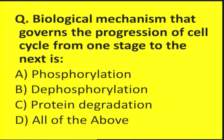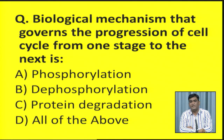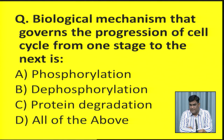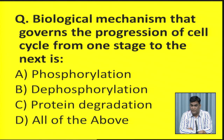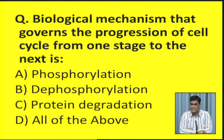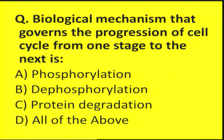This question asks about the biological mechanism that governs progression of the cell cycle from one stage to the next: phosphorylation, dephosphorylation, protein degradation, or all of the above. Kinase and phosphatase activity bringing about phosphorylation and dephosphorylation are always involved in cell cycle regulation. Protein degradation also matters because it is the cyclin that gets degraded and the cell cycle arrests. Therefore, the correct answer is D, that is all of the above.